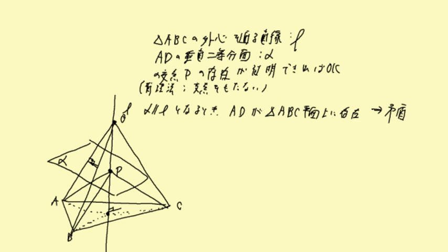4点からの距離が等しい軌跡と考えられるだろう、というような捉え方ができます。前者に関しては、四面体OABCの底面、三角形ABCがあります。この外心を通る垂線、直線Lとしましょう。三角形ABCの底面の垂線になっています。